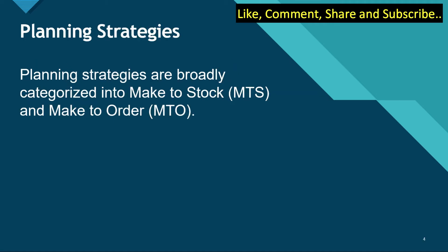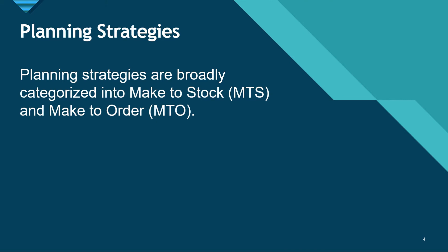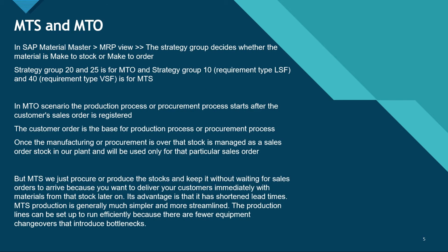A PIR can be planned for a specific date. Now, very important is the planning strategy. There are two kinds of planning strategies for demand management: the first one is MTS, that is Make to Stock, and the other is MTO, that is Make to Order. Let's discuss the difference between MTS and MTO.